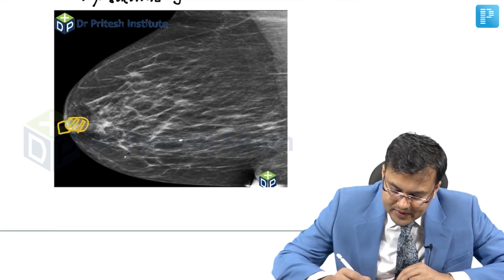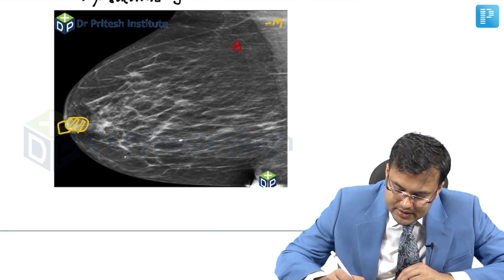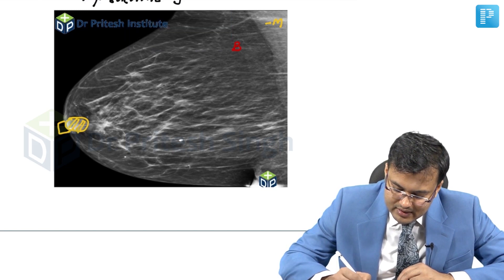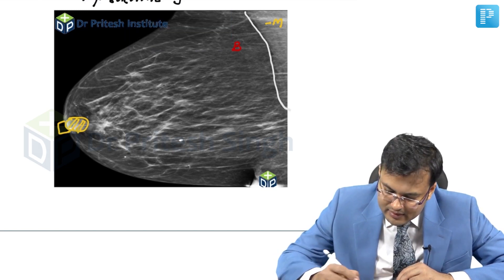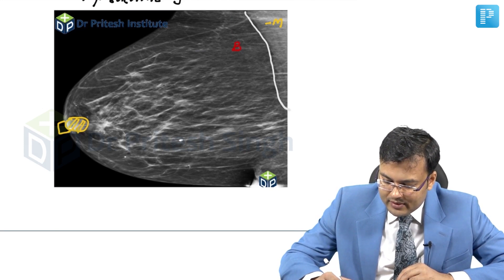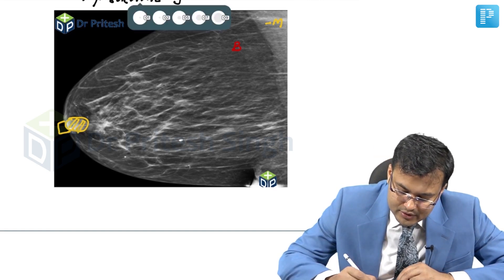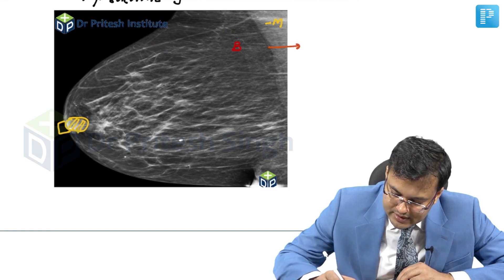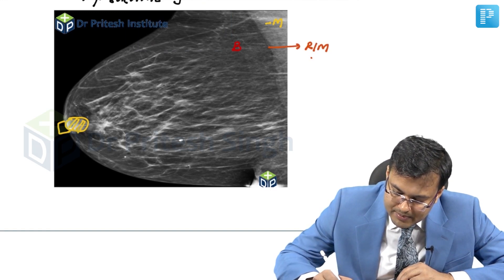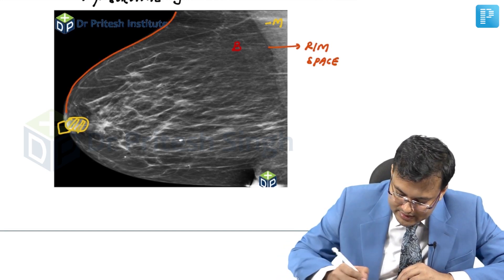Second, you can see this is the pectoralis major muscle and this is the breast tissue. In between the muscle and breast tissue, if you look carefully, there is a faint line — this is the retromammary space. Behind the breast, you can also identify the breast skin.